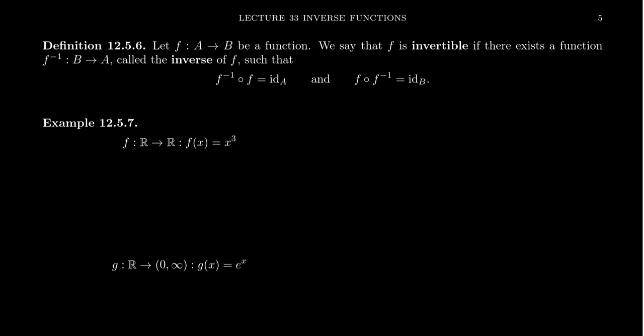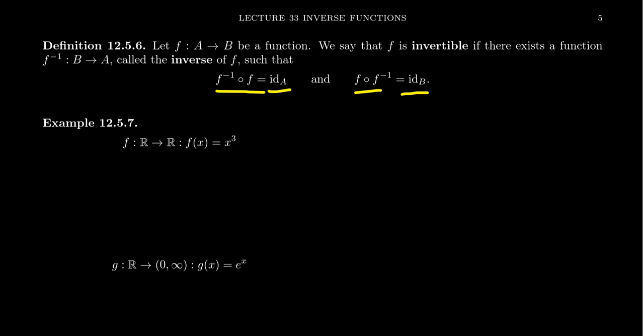Now, returning to our conversation about inverse functions — the titular topic. We define a function f from A to B as invertible if there exists a function f inverse from B to A, called the inverse of f, satisfying: f inverse composed with f equals the identity on A, and f composed with f inverse equals the identity on B. When you compose a function with its inverse, you always get back the identity function — either on the domain or codomain, depending on the direction.